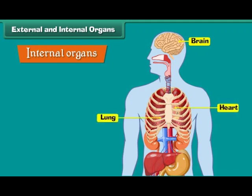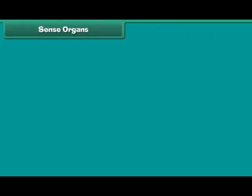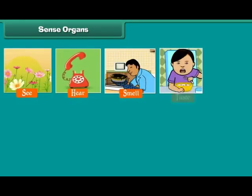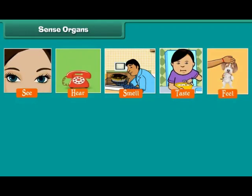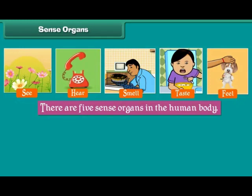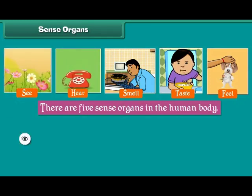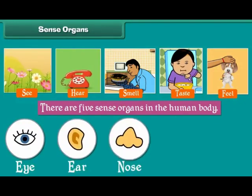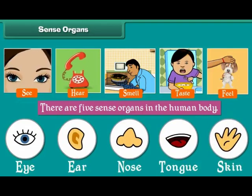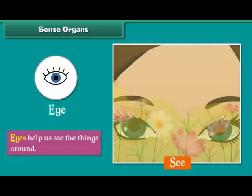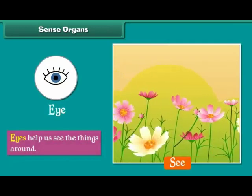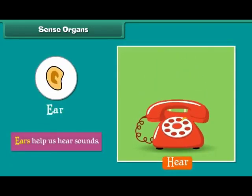Sense organs: The organs that help us to see, hear, smell, taste, and feel are called sense organs. There are five sense organs in the human body: eyes, ears, nose, tongue, and skin. Eyes help us to see the things around us; ears help us to hear sounds.